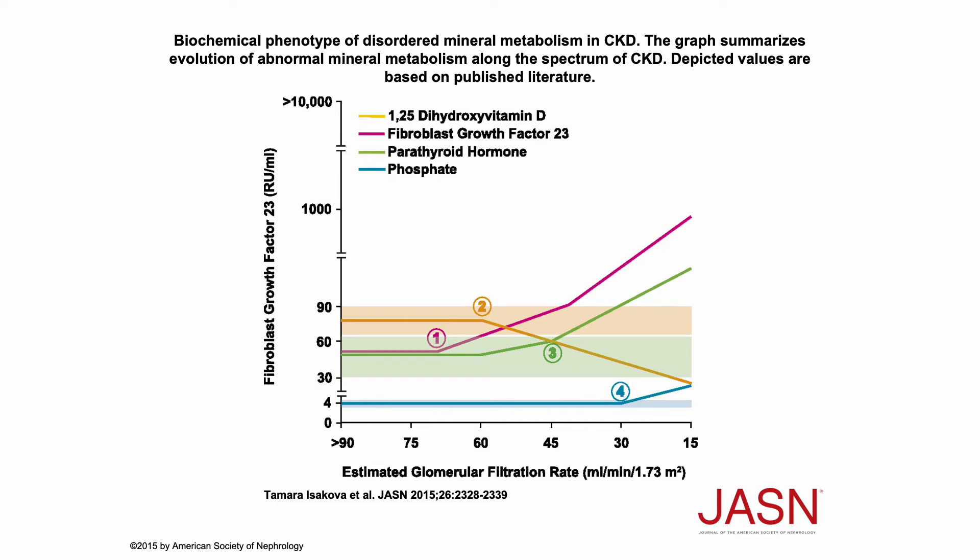If you remember one thing from this lecture, it should be this slide — it summarizes everything. This is what happens with these hormonal systems when the GFR declines. Early on, marked as number one, as GFR starts to decline around Stage 2 chronic kidney disease, FGF23 starts to rise. Phosphate may begin to increase, but FGF23 increases phosphate excretion in the urine, keeping phosphate normal — at the expense of increased FGF23 production.